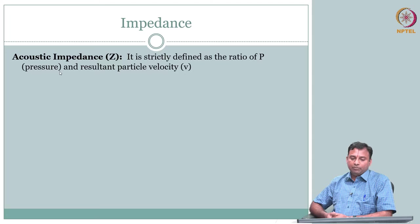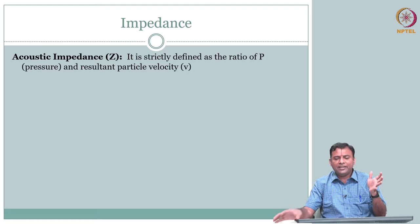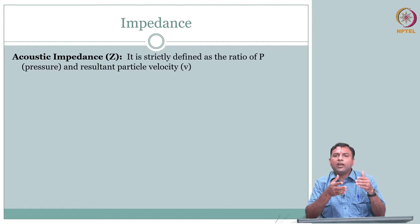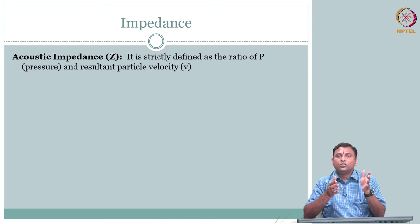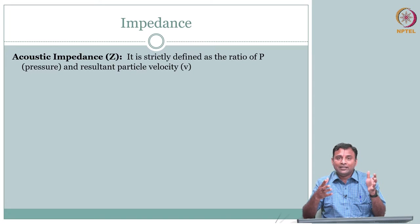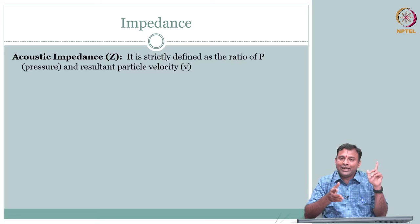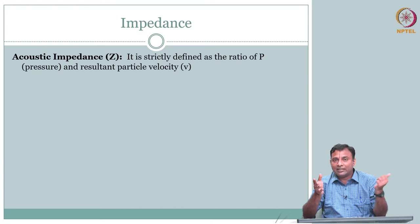What is acoustic impedance? It is strictly defined as the ratio of pressure to particle velocity. You apply a pressure difference, and that pressure difference gives rise to particle velocity. Impedance here is analogous to your electrical system — in electronics, voltage is the driver, and voltage difference drives current. Here, pressure difference drives velocity.